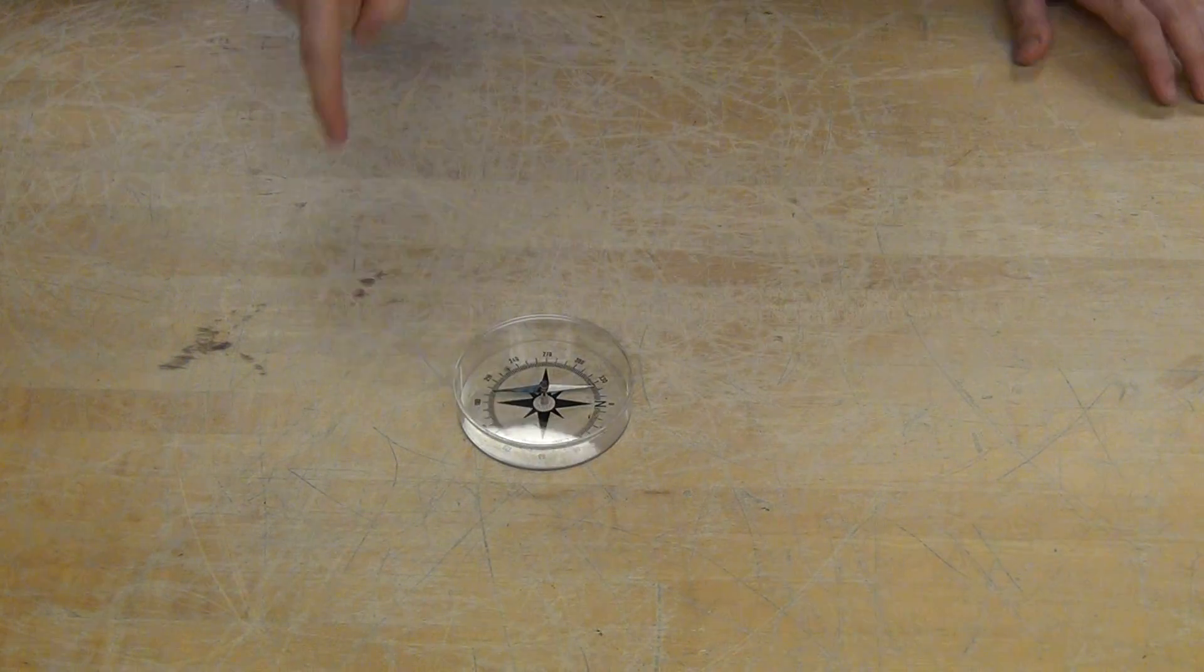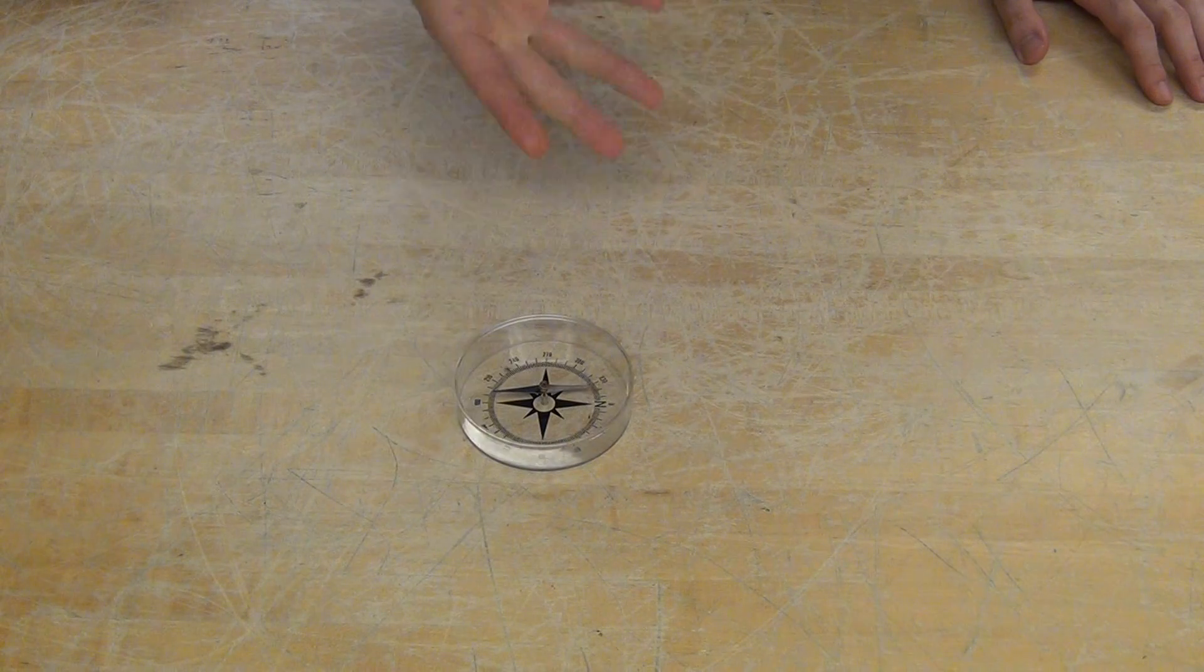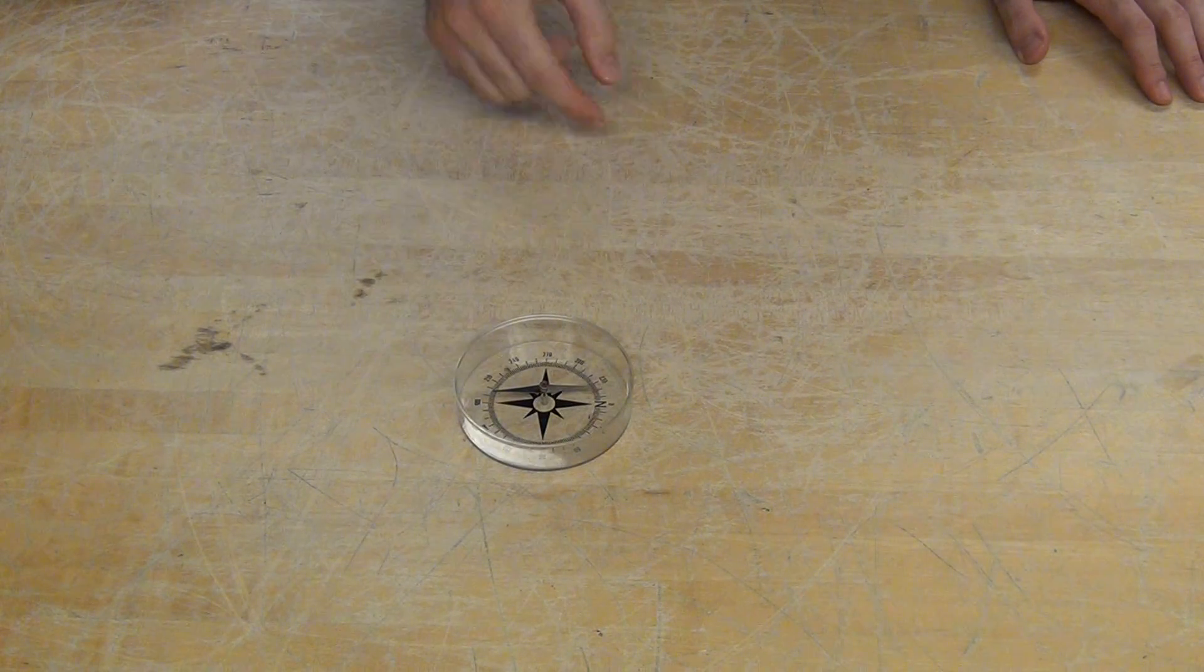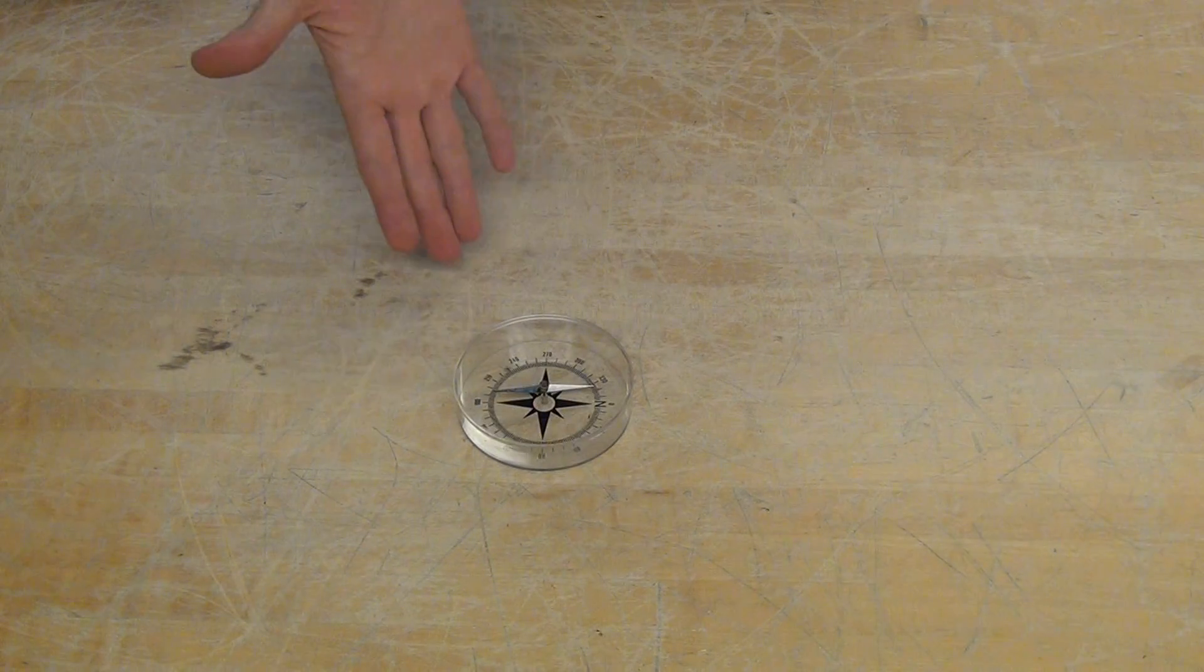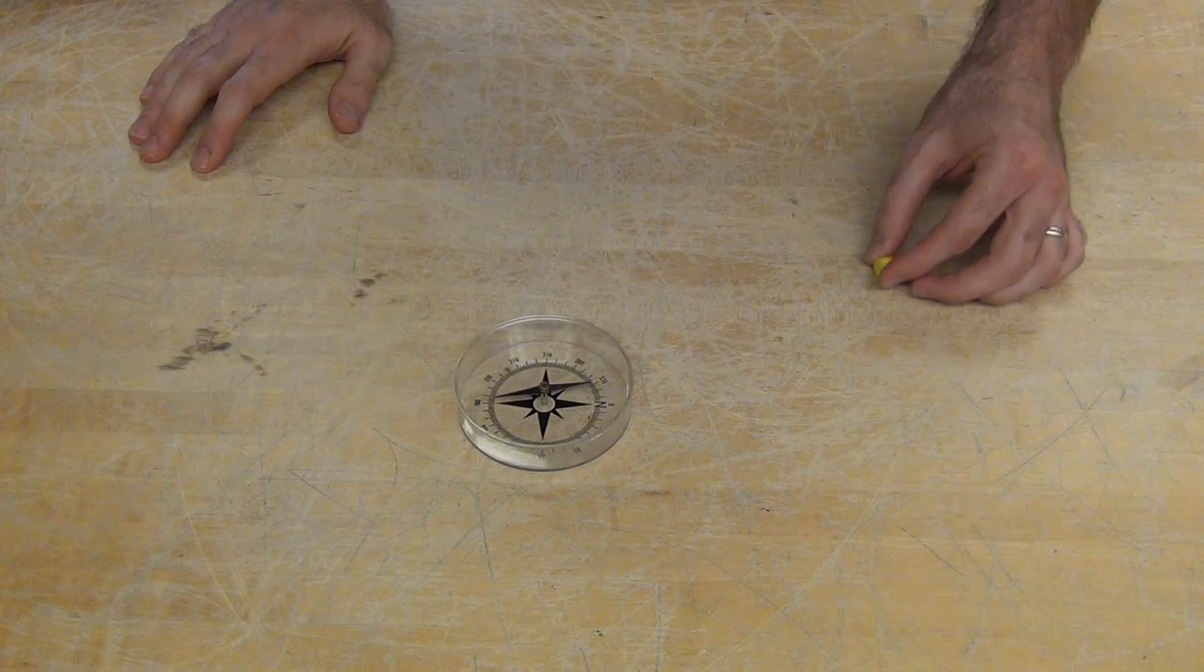A magnet, free to rotate, will align itself with the local magnetic field. We often use these as compasses to help us find north and south.